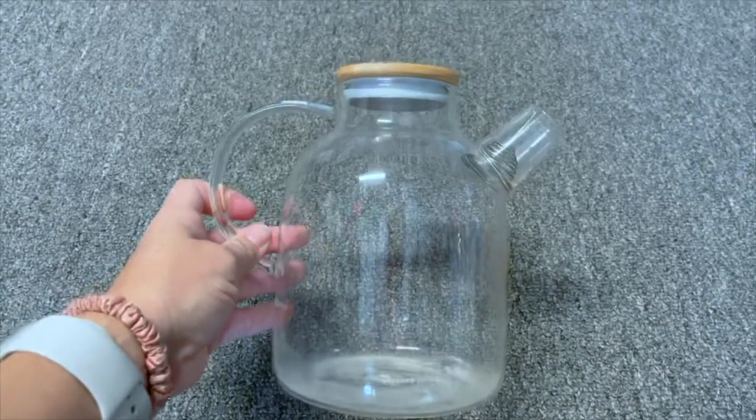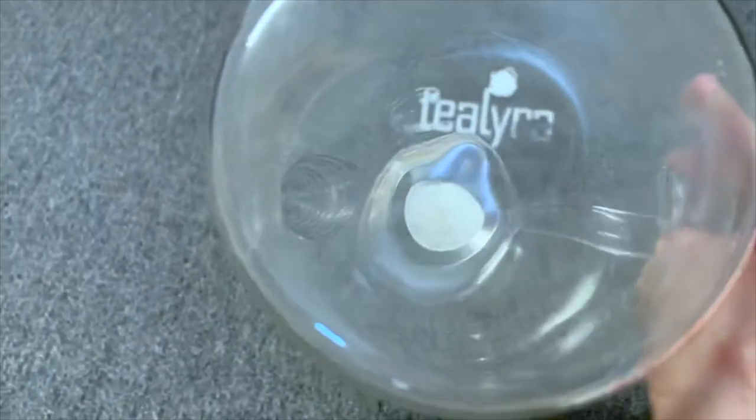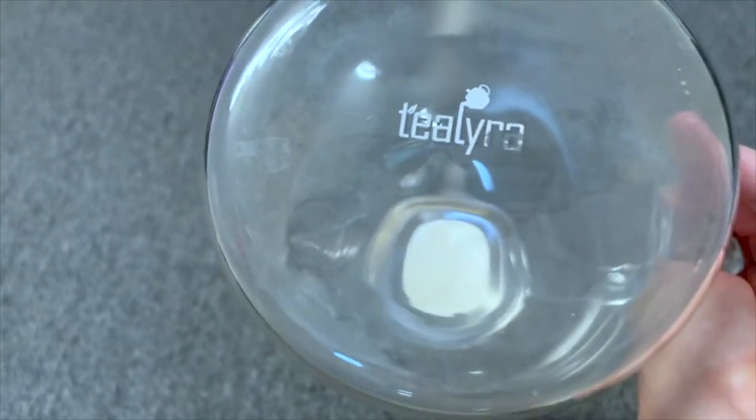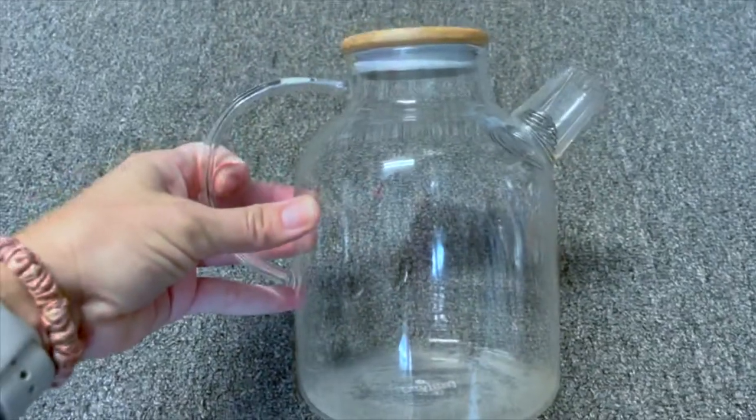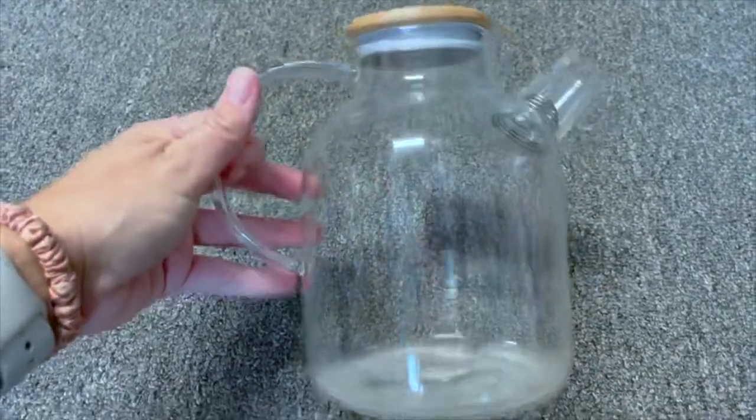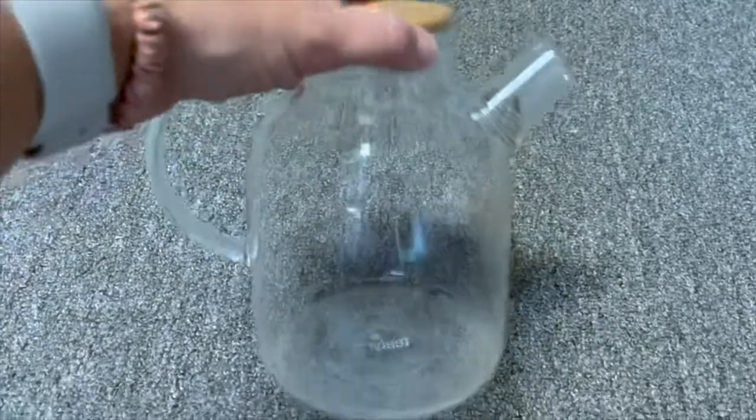So this is my all-glass tea kettle by Italura. I wanted glass because I wanted to get away from heating up plastic components when I drink tea, and I like to drink a lot of tea.